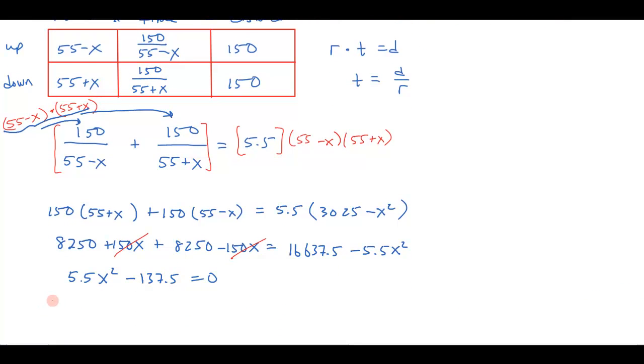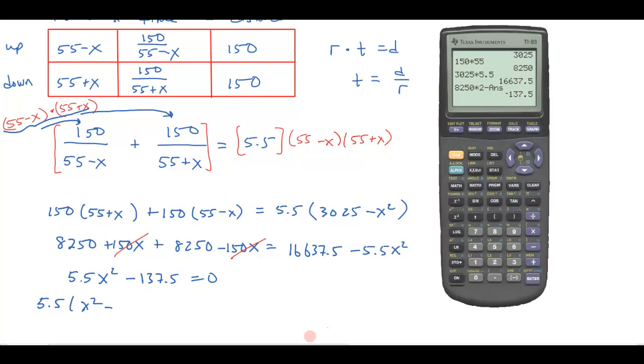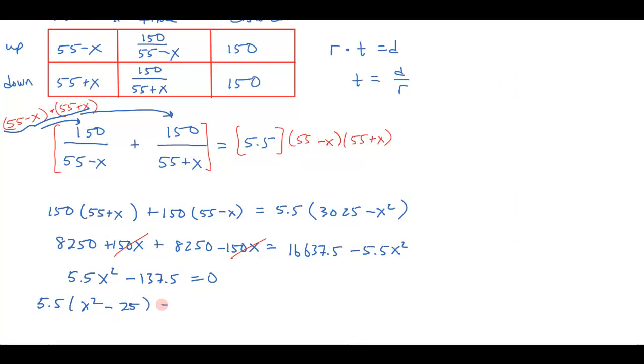Notice I can factor a 5.5 out of that. 13,637.5 divided by 5.5 gives me 25, which is really handy because then that's a difference of squares that I can factor. When I set that equal to 0, I can divide out the 5.5. I'm going to get either x equals negative 5 or x equals positive 5.